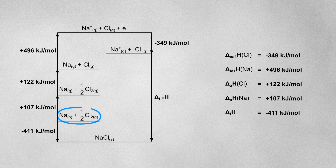If I start at the elements in their standard states and follow the directions of the arrows, one route will go from here directly to solid sodium chloride. The other route goes all the way around the rest of the Born-Haber cycle and ends up at the same place. According to Hess's law, since these two routes start and end in the same place, the overall enthalpy change for each route will be the same. Because I'm following the directions of the arrows in both routes, I can just use the values of the enthalpy changes as they're written — no need to change any of the signs at all.